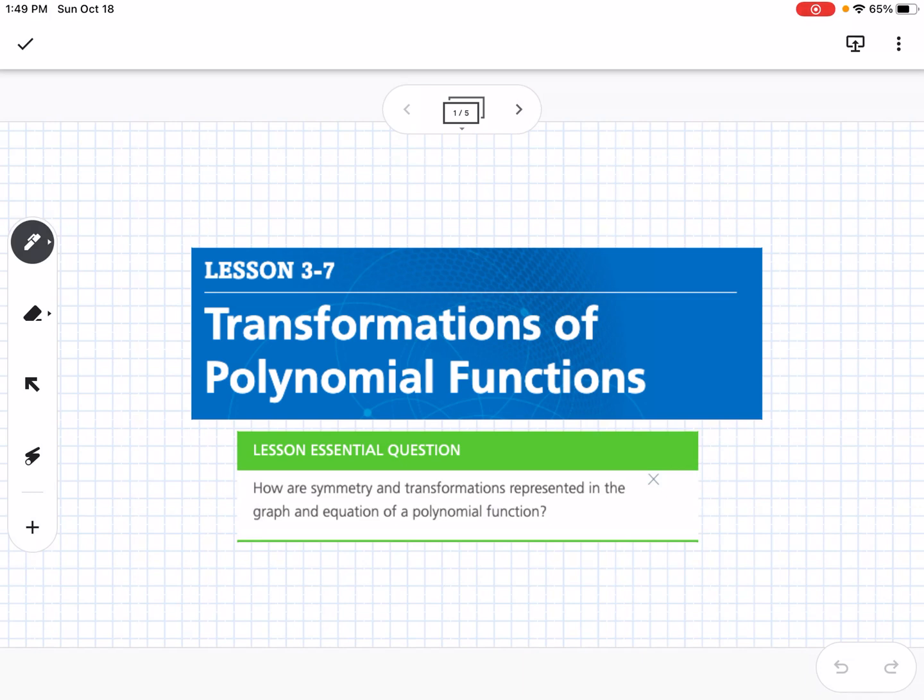This is Lesson 3-7, which is Transformations of Polynomial Functions. Our essential question is, how are symmetry and transformations represented in the graph and equation of a polynomial function?